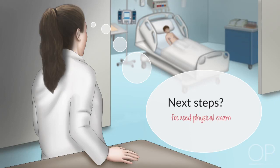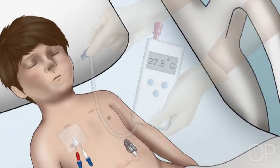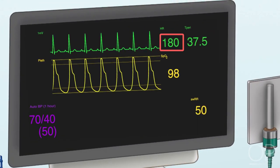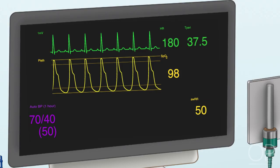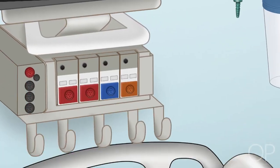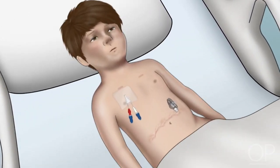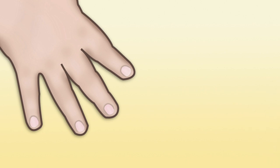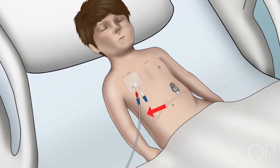You again perform a focused physical exam, looking for signs of perfusion. Vital signs are now a temperature of 37.5 degrees Celsius, heart rate of 180, blood pressure 70 over 40, respiratory rate of 50, and oxygen saturation 98% on room air. The patient again appears to be mentating clearly, but their mucous membranes appear dry, they have increased work of breathing, and their capillary refill is more than 3 seconds. The central line is now connected to tubing for antibiotic infusion. What is your next step?